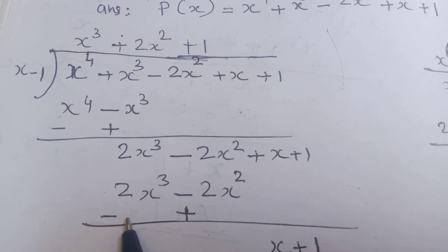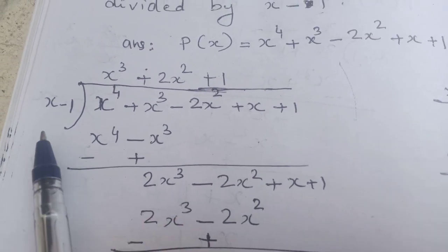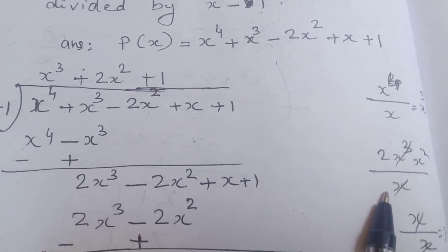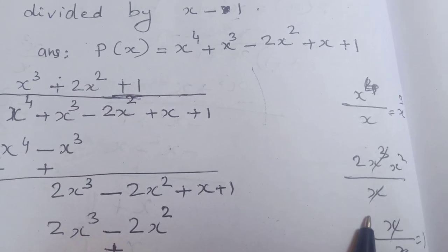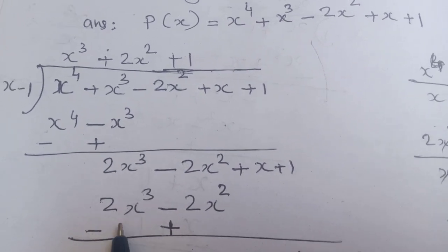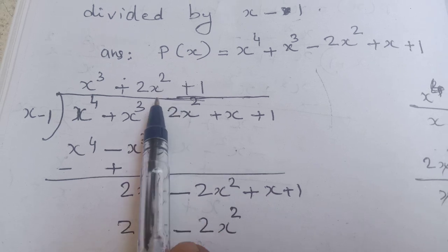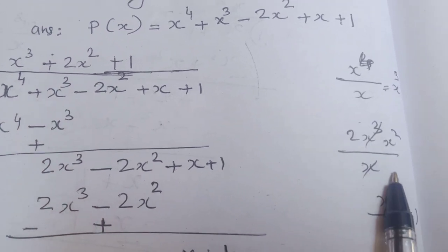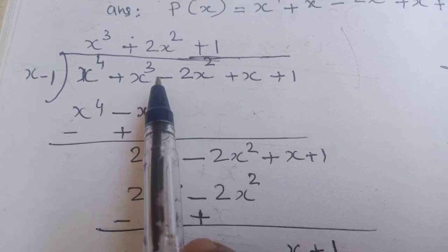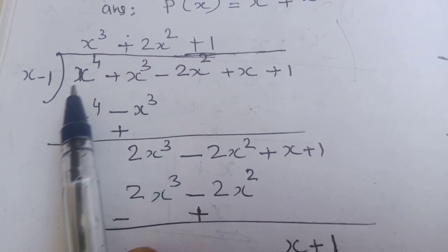Take the first term 2x³ and divide by the first term of the divisor x, giving 2x². Write 2x² here in the quotient. Then multiply: 2x² into x gives 2x³, and 2x² into −1 gives −2x².